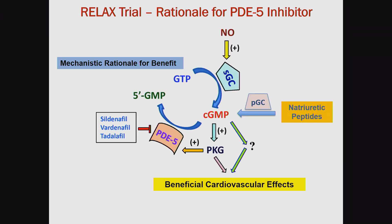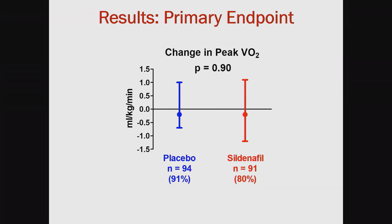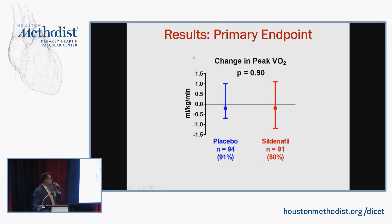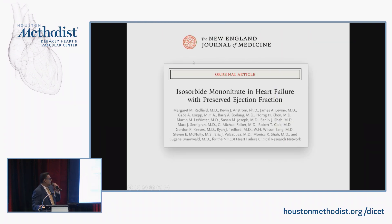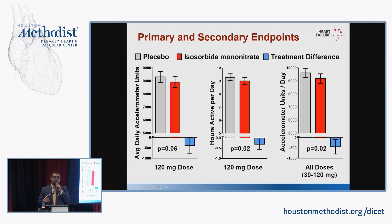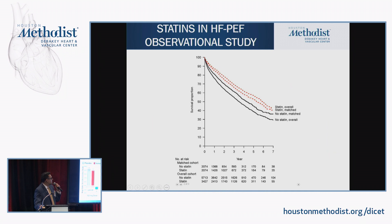Sildenafil works on the nitric oxide pathway, which is a beneficial pathway in heart failure. It was tested in the RELAX trial, where the outcome was peak VO2 or exercise capacity. Whether on sildenafil or placebo, there was no difference in exercise capacity. More recently, the NEAT HFpEF trial looked at nitrates in HFpEF — also a completely negative trial. In fact, patients on nitrates had less exercise capacity and were less active than those not on nitrates.